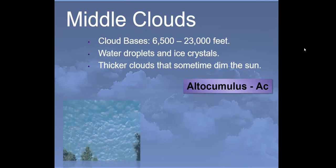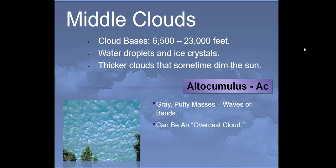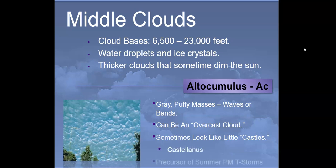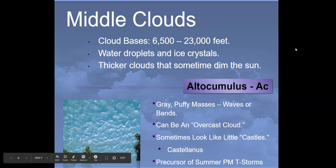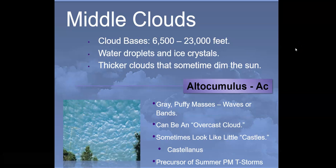Middle level clouds have bases starting around 6,500 feet, stretching up to 23,000 feet. They're made of a mixture of water droplets and ice crystals and are generally thicker, sometimes dimming the sun. The first middle-level type is altocumulus — gray and puffy masses that come in waves or bands. Sometimes they look like little castles, called castellanus clouds, and are a good precursor of summer afternoon thunderstorms.